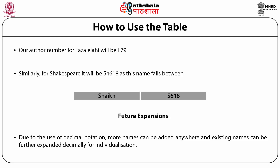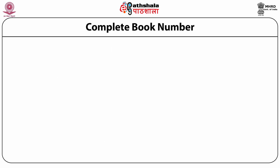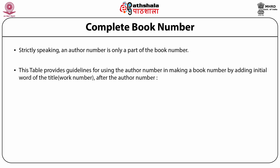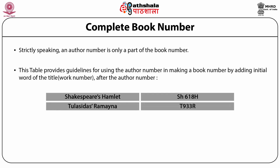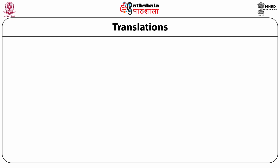Future expansion: due to the use of decimal notation, future names can be added anywhere and existing names can be further expanded decimally for individualization. Regarding the complete book number — sometimes the author number alone is not able to make the full book number; the author number is simply part of the book number. The National Library table provides guidelines for using the author number in making a book number by adding the initial word of the work as a number after the author. For example, Shakespeare's Hamlet will get the number SH618H, where H stands for Hamlet. Similarly, Tulsidas's Ramayana will get the number T933R, where R stands for Ramayana.